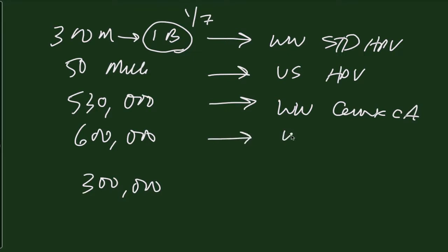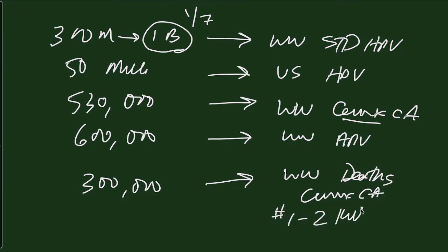600,000, the number of worldwide HPV cancers when you include not only cervix, but anal, vulvar, vaginal, pharyngeal, and so forth. 300,000, the number of worldwide deaths due to cervix cancer, which places it as number one or number two killer for women cancer deaths in the world.